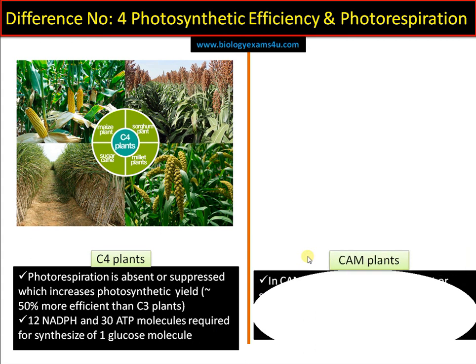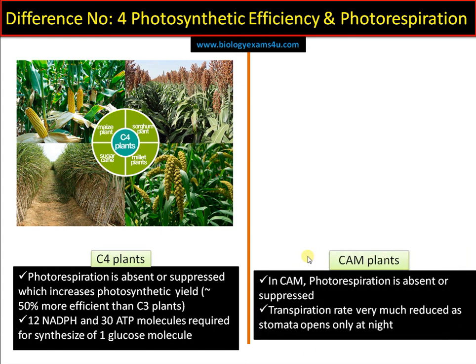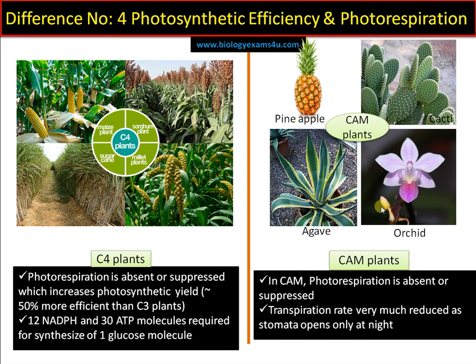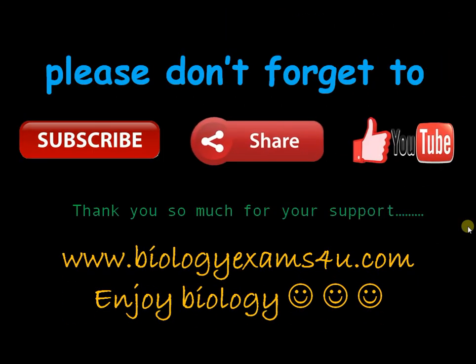In CAM plants, which are designed to live in desert conditions, photorespiration is completely absent or suppressed. Transpiration rate is very much reduced or completely avoided, as stomata open only at night to receive carbon dioxide. Thank you so much for your support.